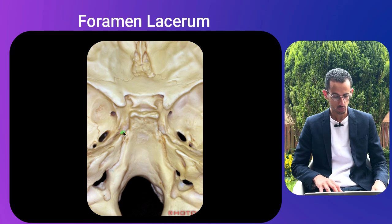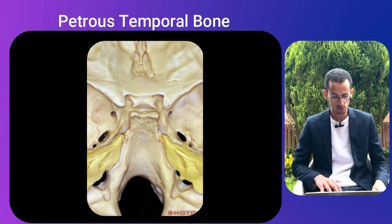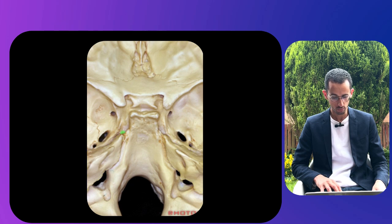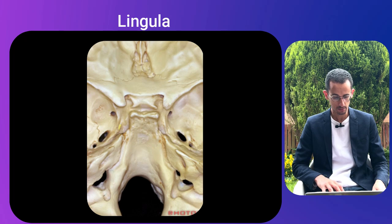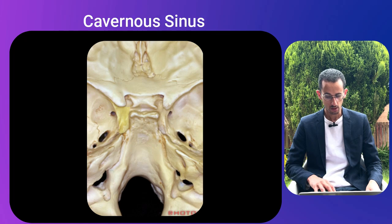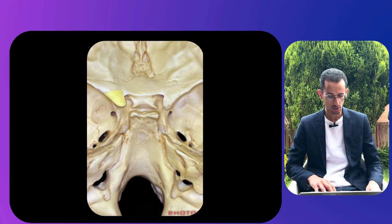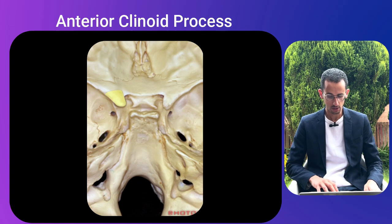To distinguish foramen lacerum from foramen ovale and spinosum: the junction of the three bones — sphenoid, petrous, and occipital — forms the foramen lacerum; foramen ovale is larger than foramen spinosum. The petrous portion of the internal carotid exits the petrous temporal bone, passes over the foramen lacerum to the carotid groove of the sphenoid, bounded laterally by the lingula. The paraclival ICA turns superiorly to form the carotid siphon within the cavernous sinus, then passes between the anterior and middle clinoid processes into the supraclinoid segment; above this the optic nerve enters the optic canal, bounded laterally by the anterior clinoid process.